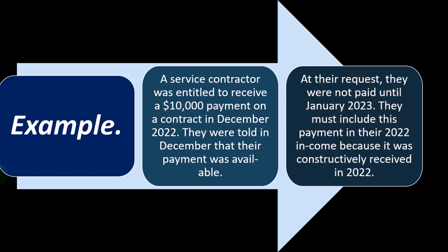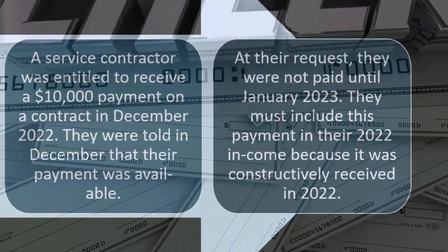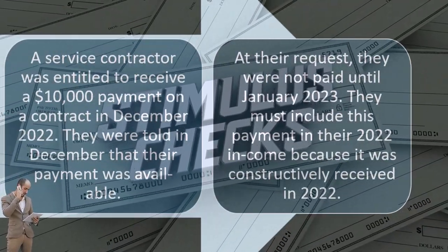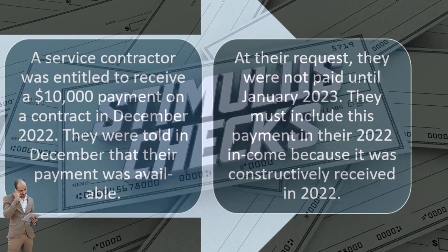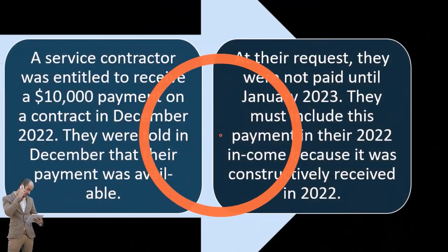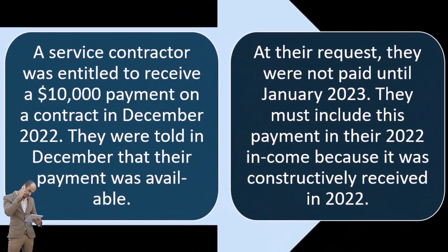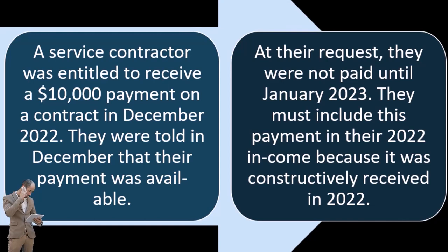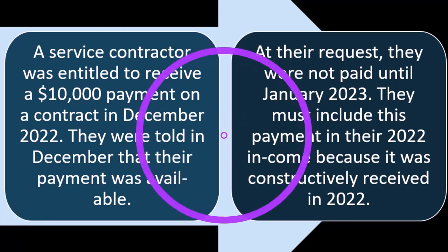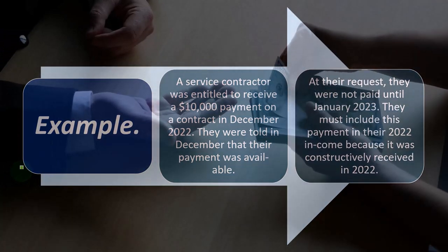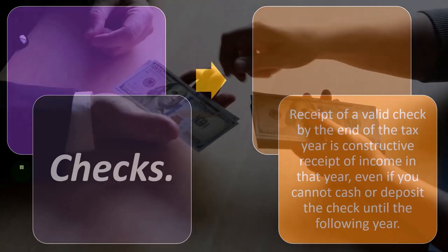Now you have a situation where you didn't hold onto the check — you told your customer don't pay me until January. Well, nothing was stopping them from paying you earlier. You told them not to pay; they would have paid you. You have complete access to it, so it should be income. You're trying to manipulate the cutoff date to have less income, lowering your taxes in 2022.